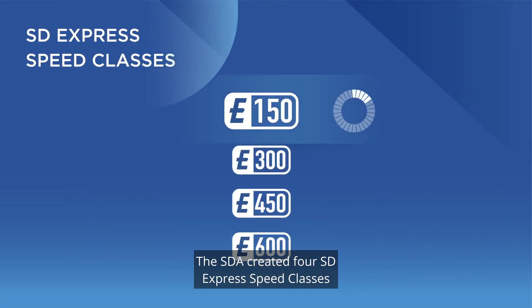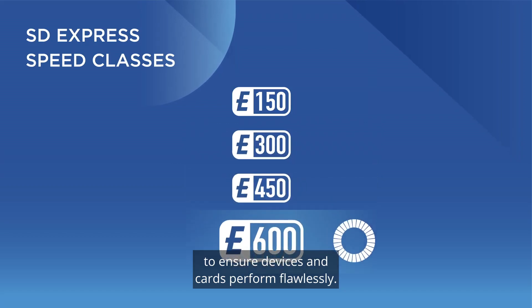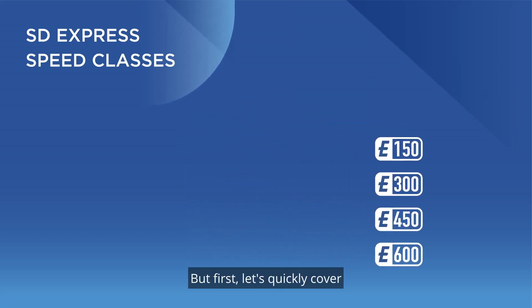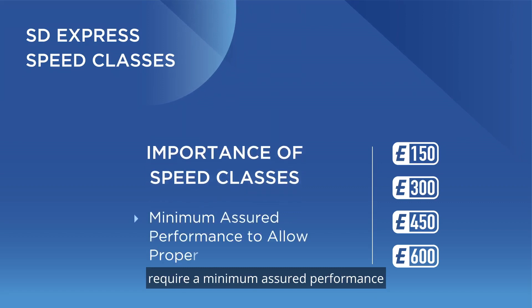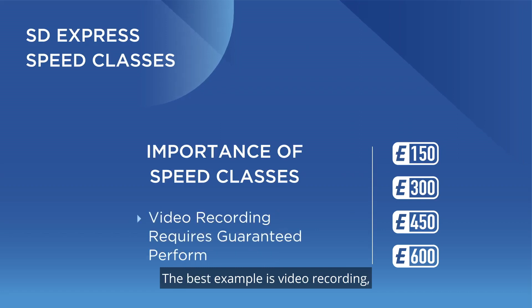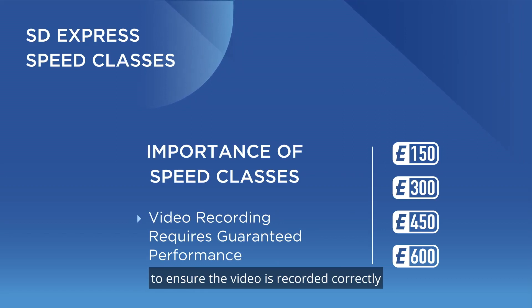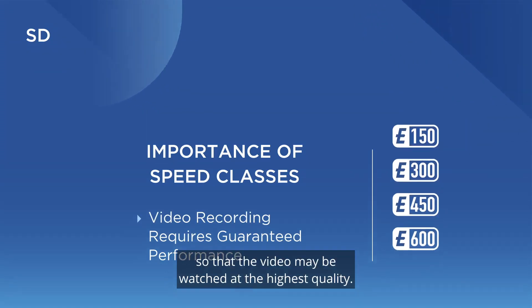The SDA created four SD Express speed classes to ensure devices and cards perform flawlessly. Speed classes are important because various applications or uses require a minimum assured performance to allow proper operation. The best example is video recording, because it requires guaranteed performance to ensure the video is recorded correctly so that it may be watched at the highest quality.